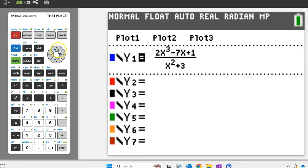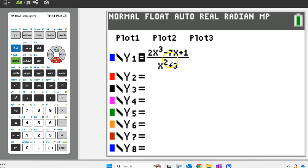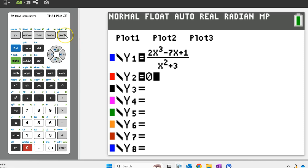Hit your y equals button. I find that the easiest way to find the zeros of a function is to graph the function and the x axis and find the intersection point. So let's put a zero on y2 so that the x axis will show up on the graph. Hit graph and let's see what we've got to start with.